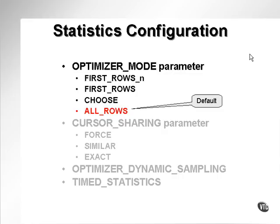Now let's take a look at configuration parameters in the Oracle database parameter file as they apply to statistics and the generation of statistics. We have four parameters here: